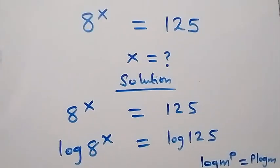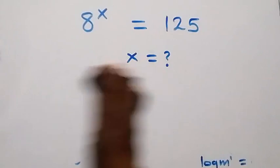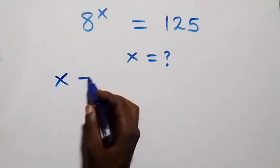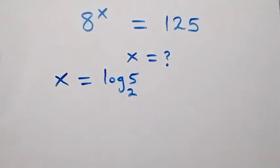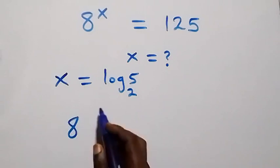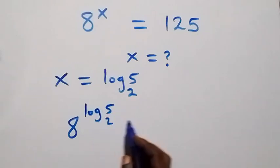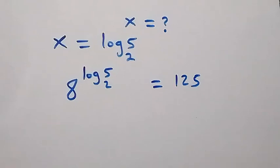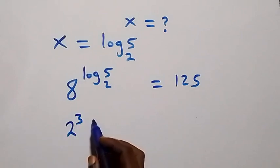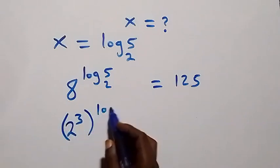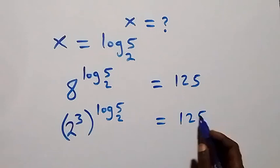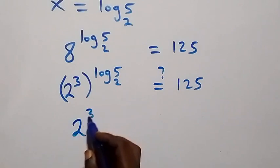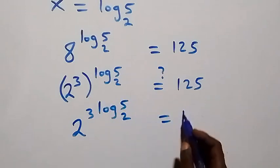Now let's verify that x equals log₂5 satisfies the given equation. Substituting, the equation becomes 8 raised to the power log₂5 equals 125. We rewrite 8 as 2 raised to power 3, so we have 2 raised to power 3, all raised to power log₂5, equals 125. The powers multiply: 2 raised to power 3·log₂5 equals 125.